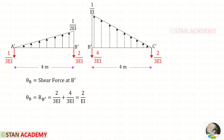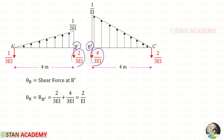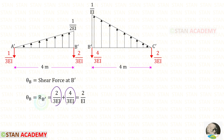Now we are going to find the slope at point B, that is theta B. We can find that from the conjugate beam: theta B equals the shear force at point B'. At B' there is only the vertical reaction RB'. So theta B = RB' = RB1' + RB2' = 2/(3EI) + 4/(3EI) = 2/EI.